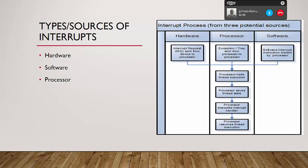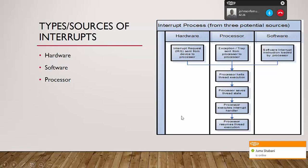On slide 7, types and sources of interrupts: we have three types — hardware, software, and processor. For hardware interrupts, the hardware sends an interrupt request to the processor. The flow shows that with a hardware interrupt request, you move down to process the alternate thread execution, the processor saves the thread state, and then the processor executes the interrupt.